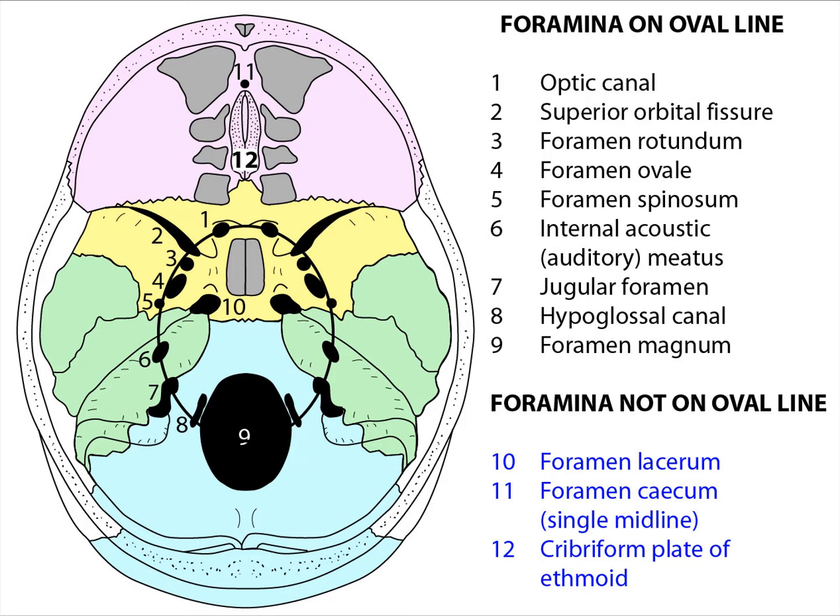You can start by identifying the optic canal between the lesser wings and the body of the sphenoid. Passing through here we have the optic nerve, the ophthalmic artery, the three layers of dura, and CSF. We mustn't forget that on the ophthalmic artery there are sympathetic fibres.